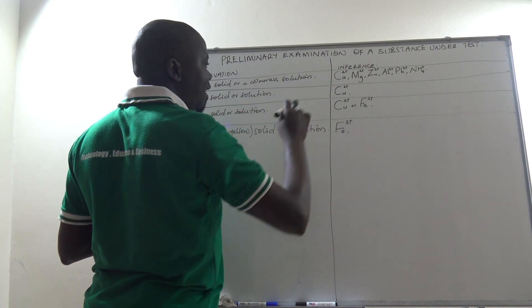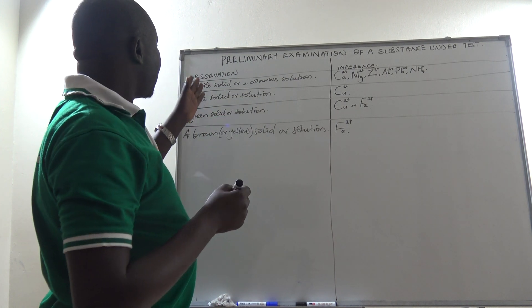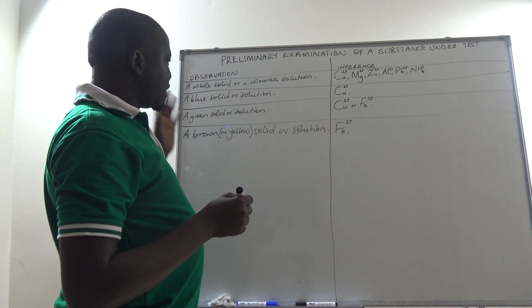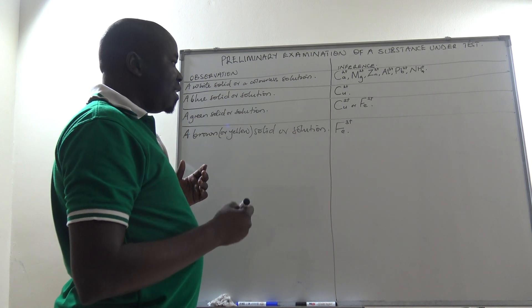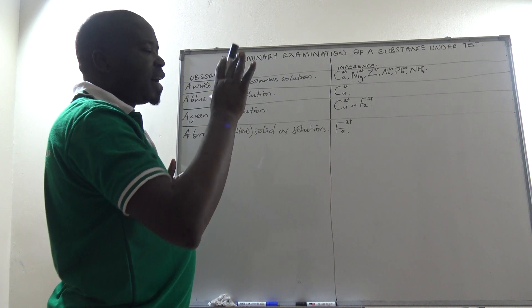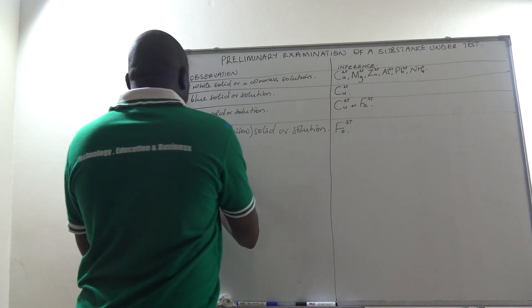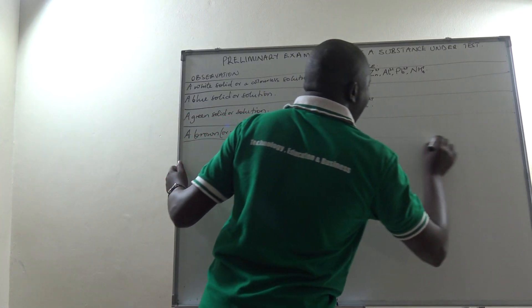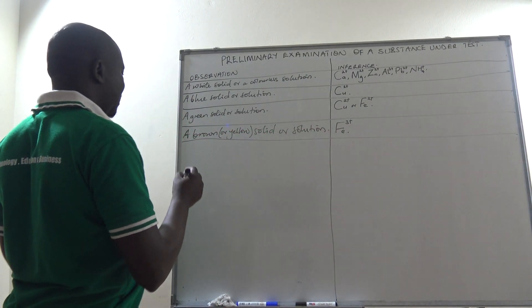From what we have seen, the color of the substance provided for testing pertains to the cations that may be present. Color is only for the cations.